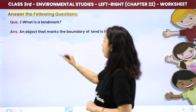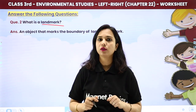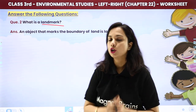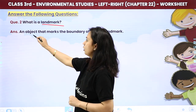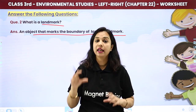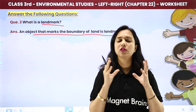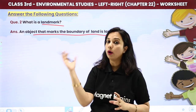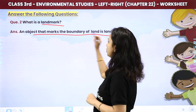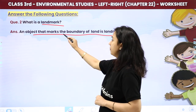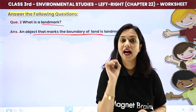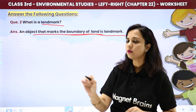Then, what is a landmark? An object that marks the boundary of a land is a landmark. One object marks your boundary — that is what we call a landmark. An object that marks the boundary of a land is known as a landmark.